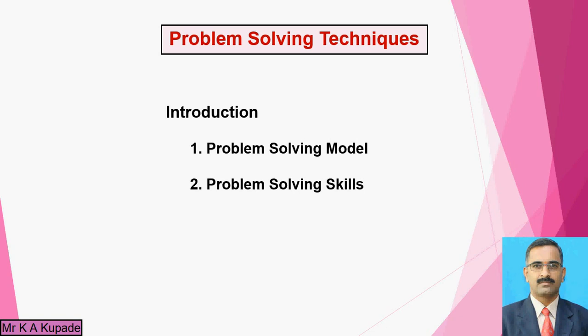Today I am going to give a brief about this particular problem solving technique. First, identify which kind of problem it is and what the exact cause of that problem is. Then we have to gather information — whatever things are related to the problem, we have to identify. Then we have to consider different solutions — maybe one, two, three, four — and determine which one is the better solution. Then apply that solution and see what exact result you are getting. That is considered under the problem solving model.